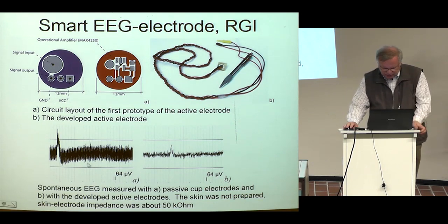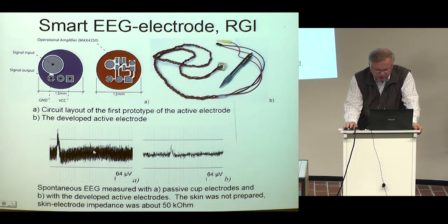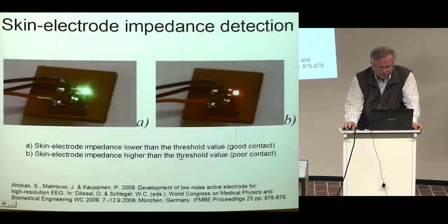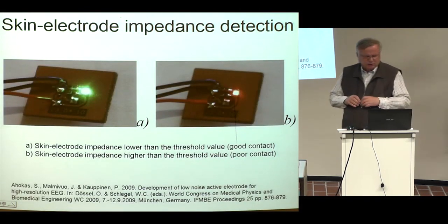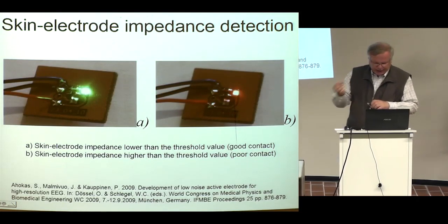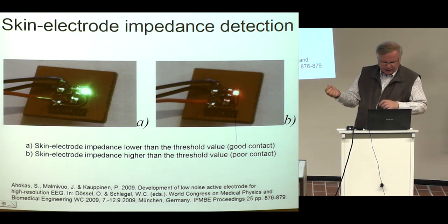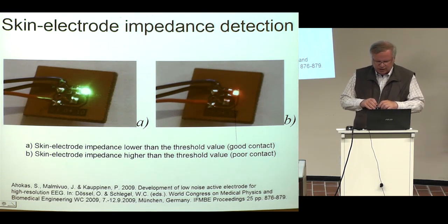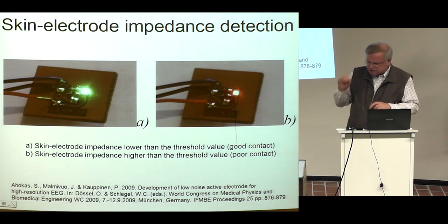Here is an example of a signal recorded with a classical electrode and with the active electrode — the noise level is much, much lower. We also added a system that detects the skin-electrode impedance: there is an LED light in the electrode indicating its color. If the impedance is good enough — low value — it shows green; if too high, it shows red. So it is a smart electrode: it is possible with the electrode itself to find what is the input impedance.